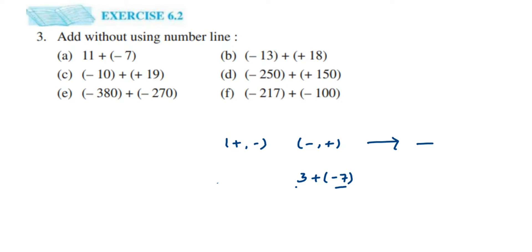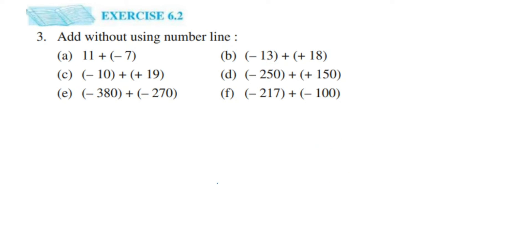For example, we have 3 plus minus 7. You can see minus 7 and 3 have different signs, so we subtract: seven minus three is four. Now for the sign, just look at the numbers — three and seven. Don't look at minus seven, just look at seven. Seven is greater and it has a negative sign, so the final answer is minus four. These are the two rules we use when adding integers.